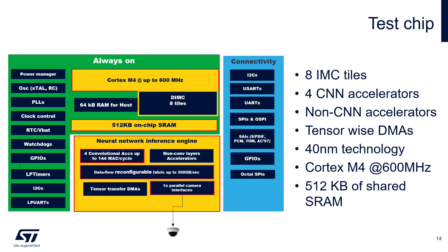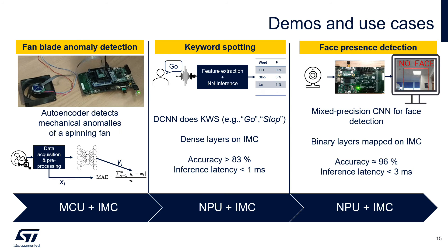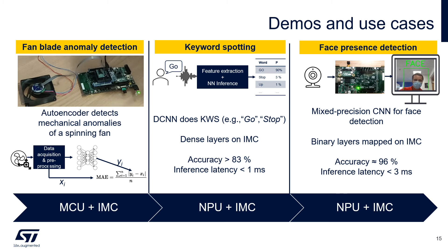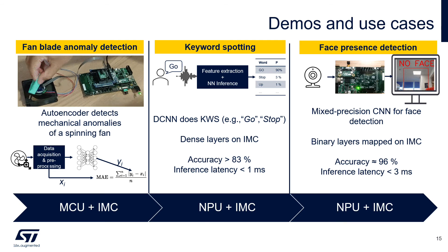The first test chip is working and is composed of a Cortex-M4 running at 600 MHz in 40 nm technology — so as I said, we don't need the latest deep submicron nodes. It includes half a megabyte of SRAM, a tensor-wide DMA, four CNN accelerators, and eight in-memory compute tiles. The use cases and demos we developed span from anomaly detection — where inertial sensors detect vibrations, data are passed to the IMC, and LEDs highlight detected anomalies — with the MCU essentially unloaded since all workload runs in the IMC.